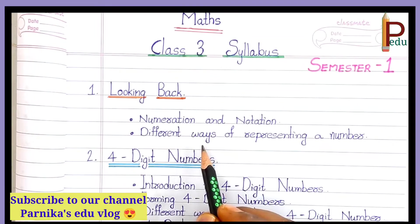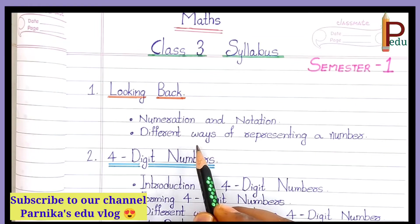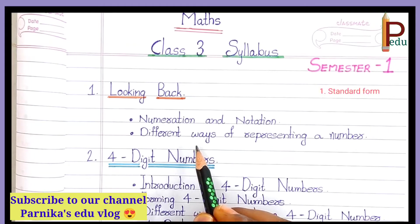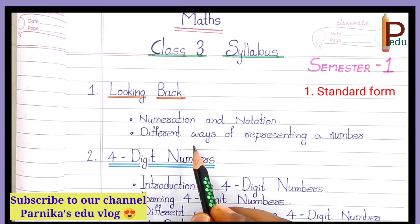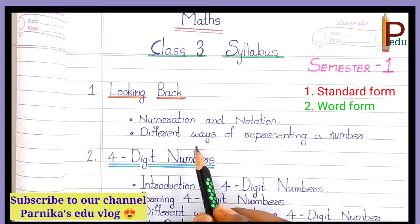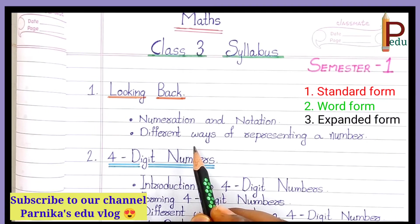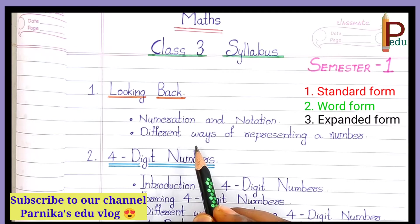One number can be represented in three ways. First one is Standard Form, second one is Word Form, third one is Expanded Form. We will also have problems on these.